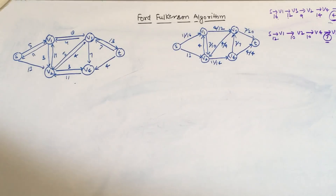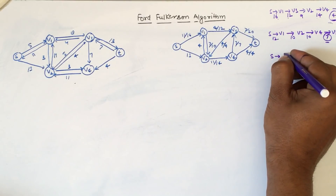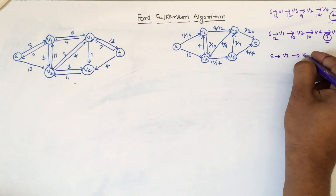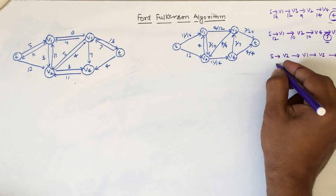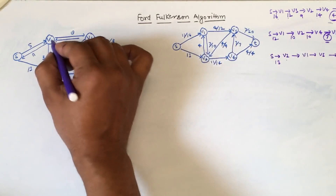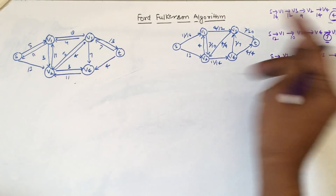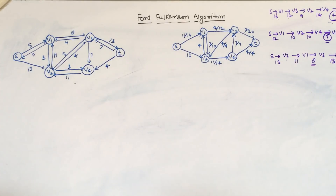Now we find another augmented path. This time the path is s to v2, v2 to v1, v1 to v3, and v3 to t. From s to v2 the residual capacity is 13, from v2 to v1 the residual capacity is 11, from v1 to v3 the residual capacity is 8, and from v3 to t the residual capacity is 13. The bottleneck capacity is 8, so we can insert 8 more units into the network.